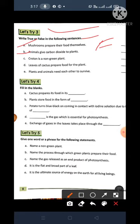This is false. What you will write here? False F-A-L-S-E False. B. Animals give carbon dioxide to plants. Yes. This is true. What you will write here? True T-R-U-E True.